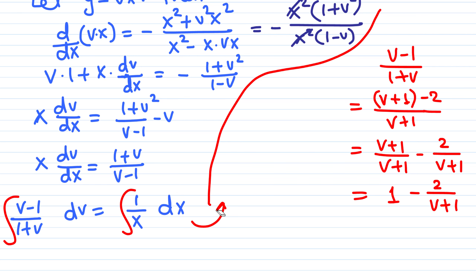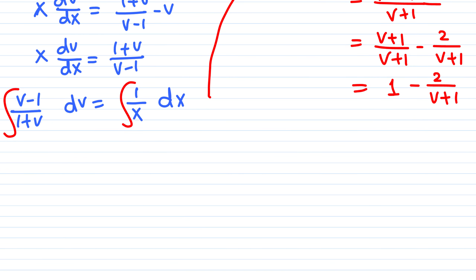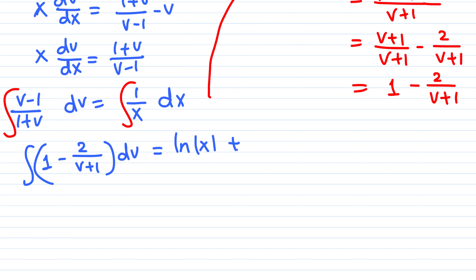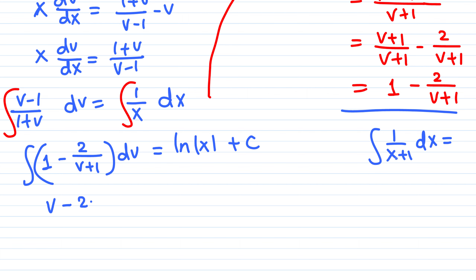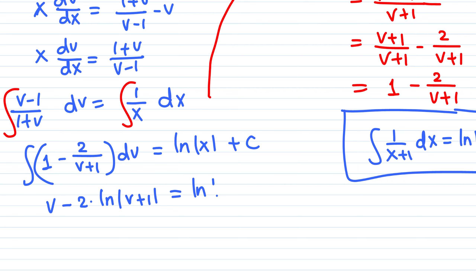Rewriting, we integrate one minus two over v plus one dv, which equals natural log of x plus a constant. Integrating: v minus two times natural log of v plus one plus C equals natural log of x plus C. Combining constants, we are done and now need to back-substitute.